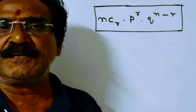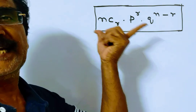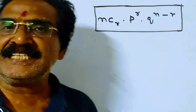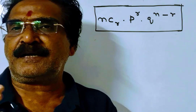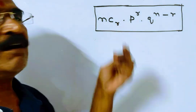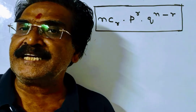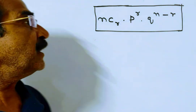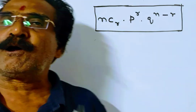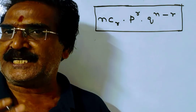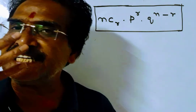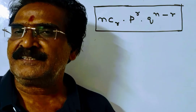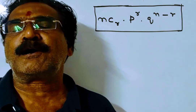This type of problem can be solved using the binomial distribution formula. Here, n is the total number of tries, r is the number of times the specific success comes out, p is the probability of success — that is, the probability of hitting the target — and q is the probability of failure, that is, the probability of not hitting the target.